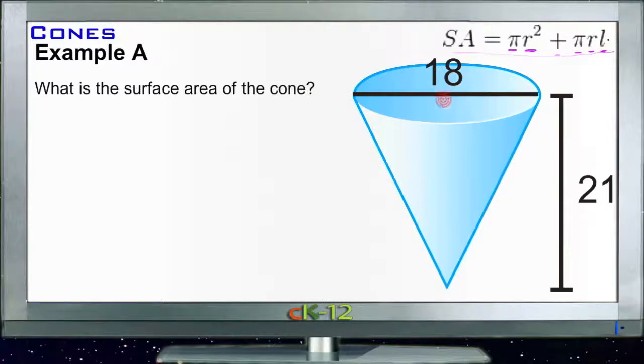We do have the radius. The radius is one half of the diameter, so the diameter is 18, which means our radius from here to here is 9. So we know that r equals 9.